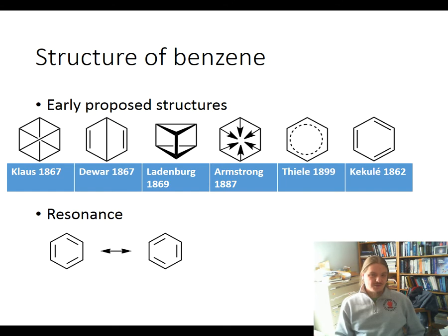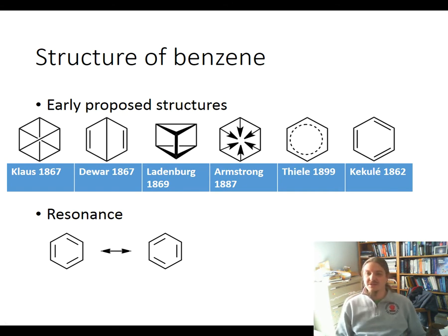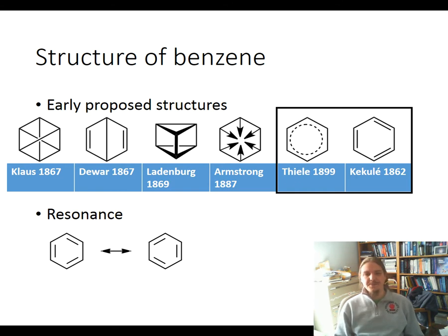Here are some early proposed structures — from August Kekulé's structure on the far right, through structures from Claus, Dewar, Ladenburg, Armstrong, Thiele, and Kekulé. It's the Kekulé structure on the far right that has survived into the modern world as the structure of benzene, although the Thiele structure is also used. Because benzene has resonance, as depicted on the bottom, many people use the Thiele structure to represent the resonance hybrid. It's worth noting that the Dewar and Ladenburg structures represent real structures that can be isolated, and derivatives have been synthesized over the years.